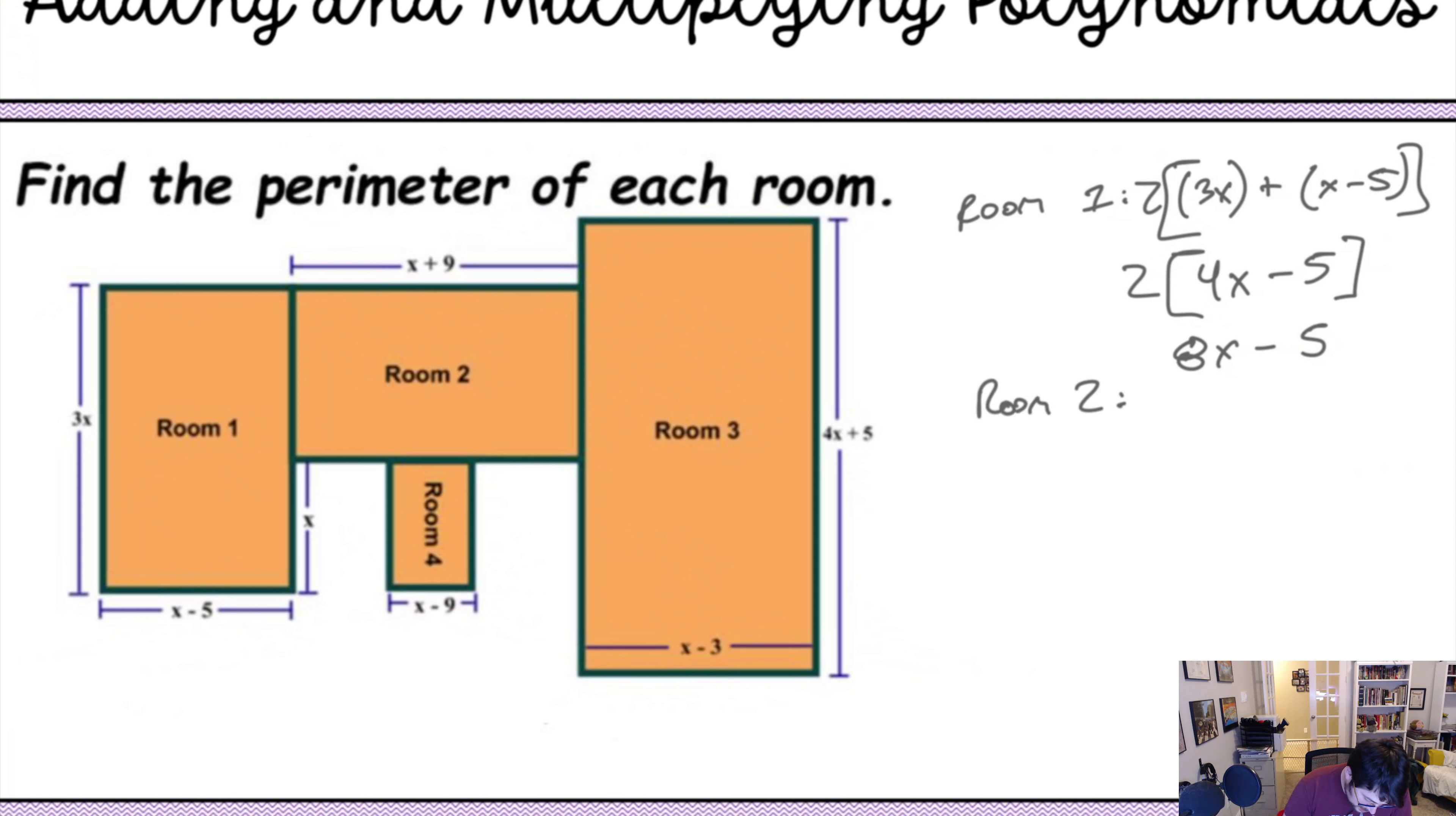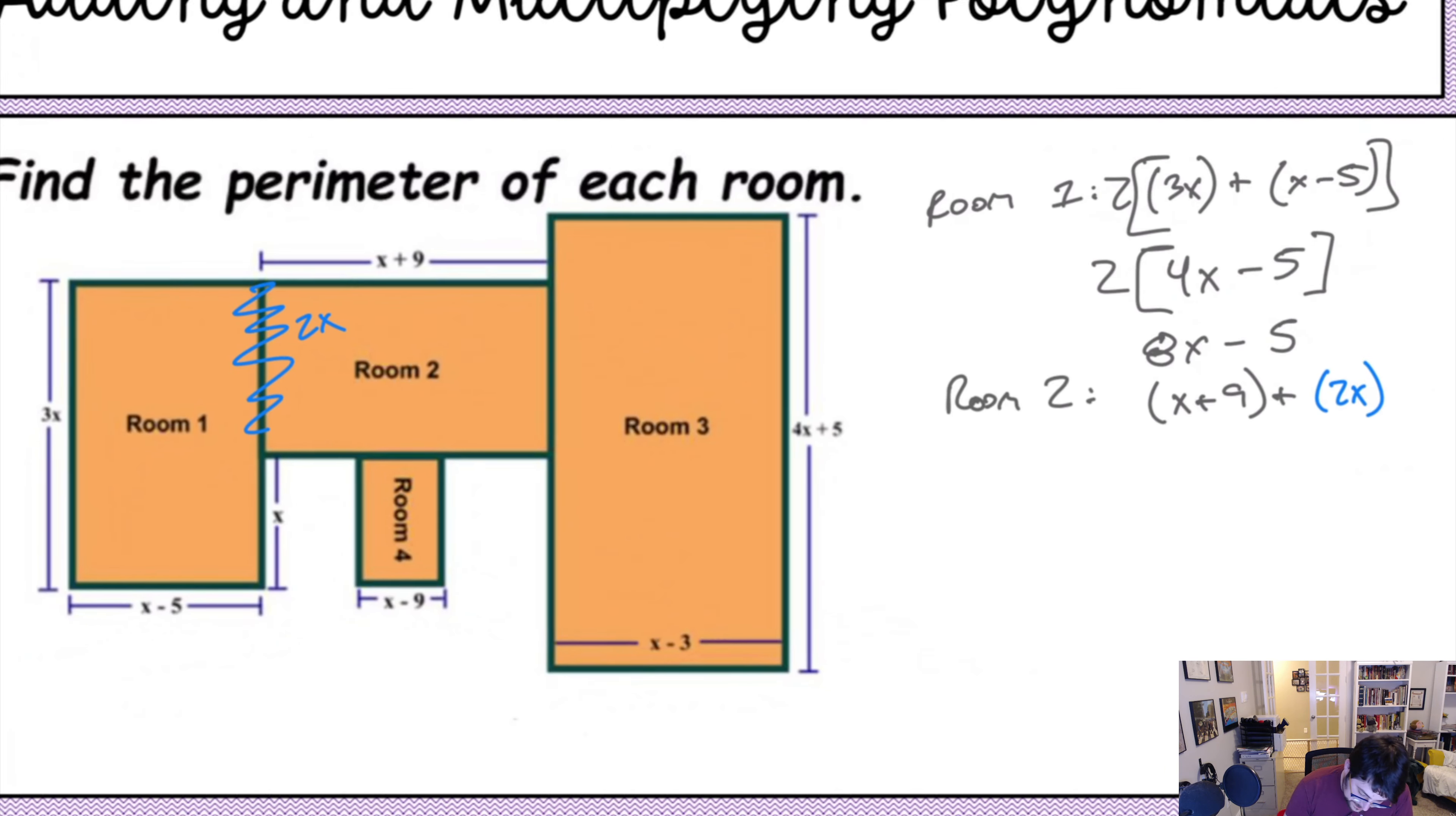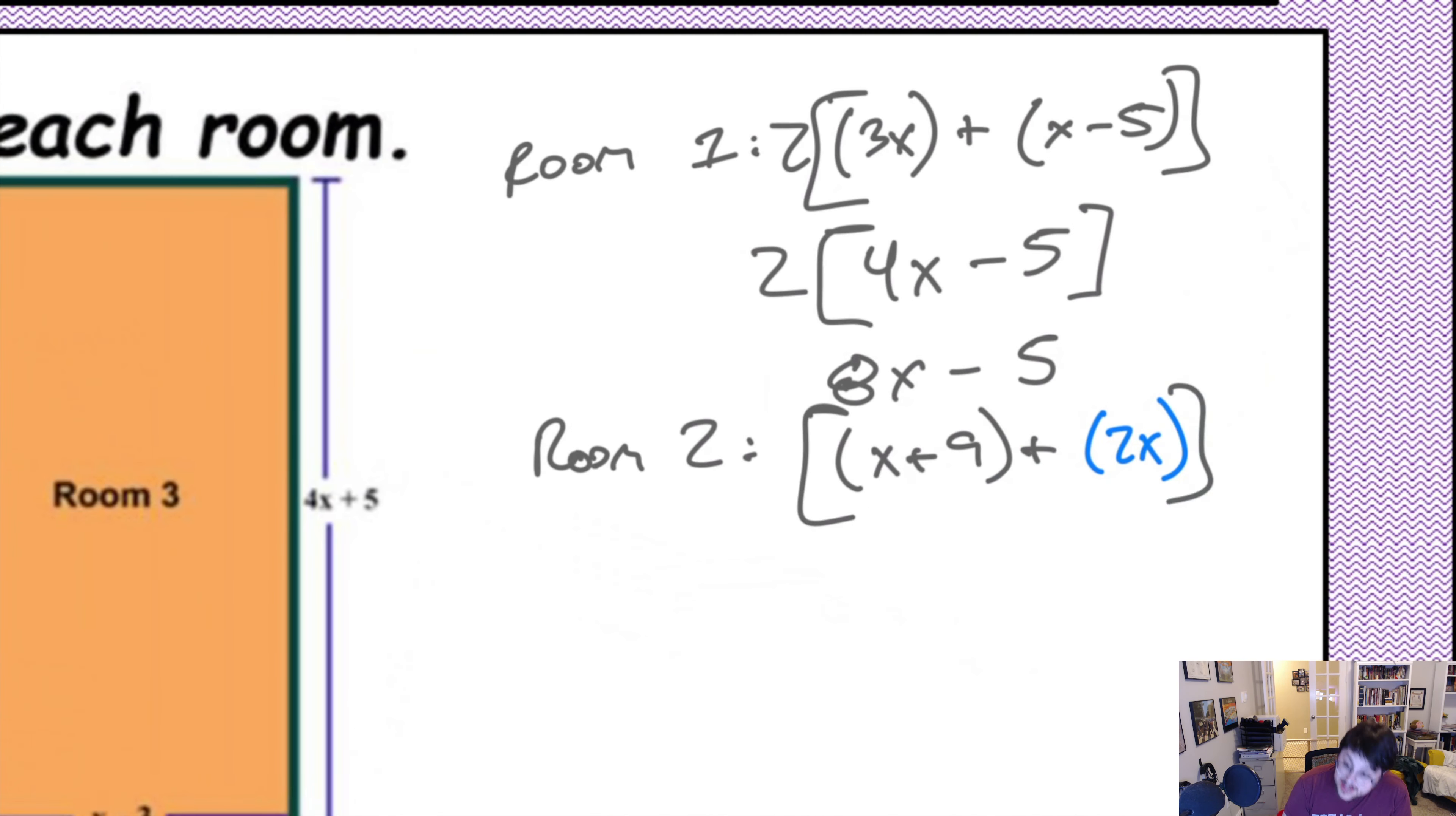Room 2, we have one side of x plus 9. And then, the question is, what is this side? Well, given that we see the side of x and we have 3x, the difference between that is 2x. So, we're going to add 2x. Again, taking this, multiplying by 2. So, we end up with 3x plus 9 times 2. That gives us 6x plus 18.